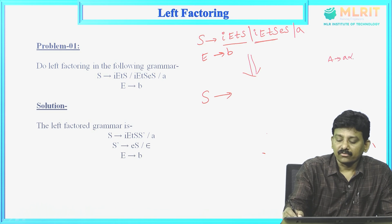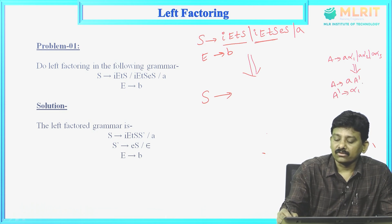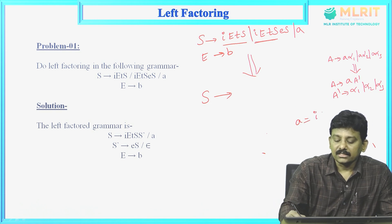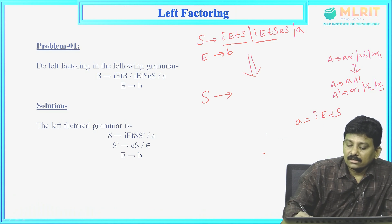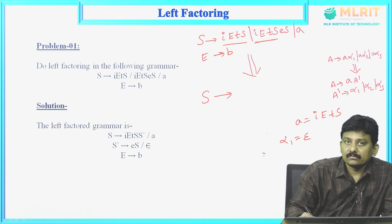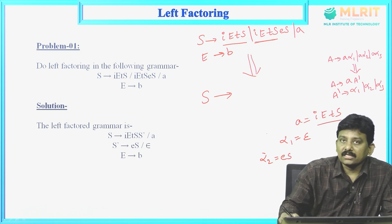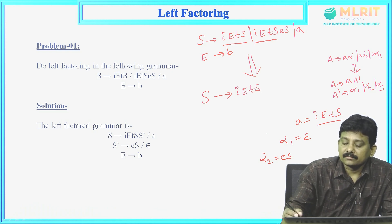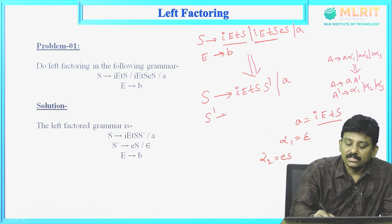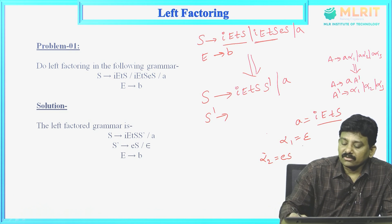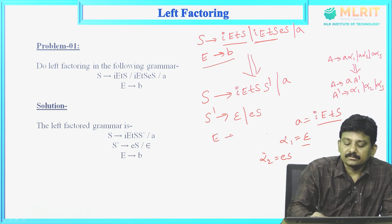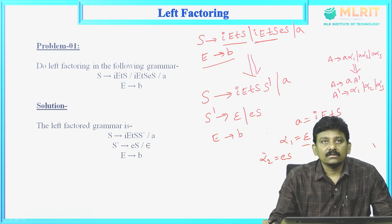Here, using the template A derives a-A', A' derives alpha1 | alpha2 | alpha3: the common prefix 'a' is iets, alpha1 is epsilon, and alpha2 is es. So after left factoring, S derives iets-S', and S' derives epsilon | es. The rule E derives b remains as it is. That is how we left factor the given grammar.